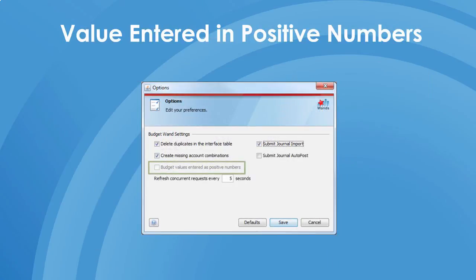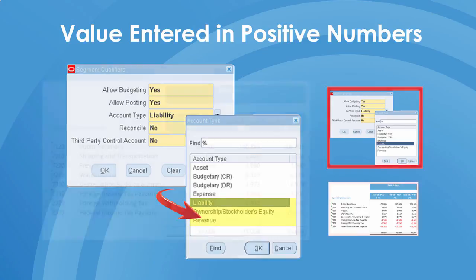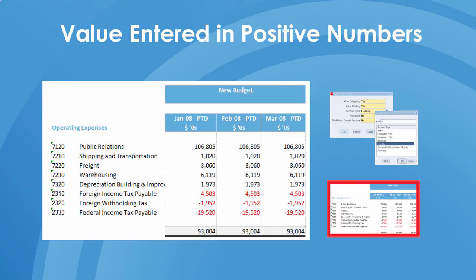There's also an option to enter budget values as positive numbers. For some customers, it makes much more sense to enter revenue, owner's equity, and liability accounts as positive values, and if that suits your business, then that can be accommodated with this option.